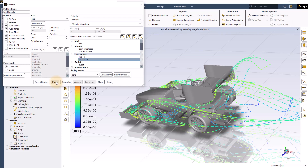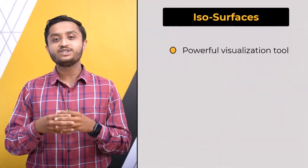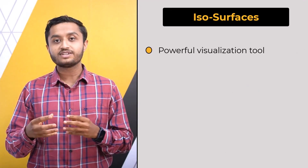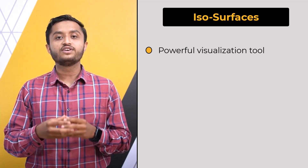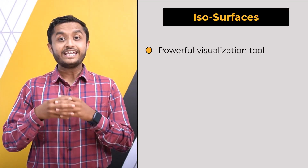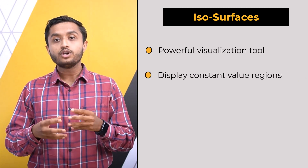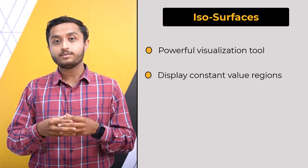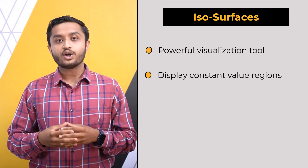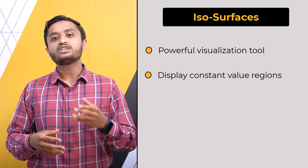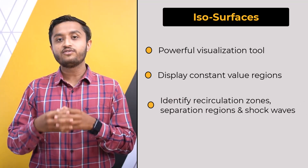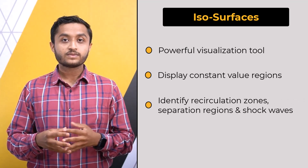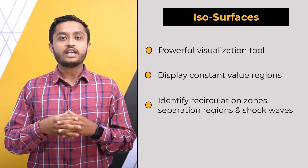Let's now move to isosurfaces. Isosurfaces are a powerful visualization tool in CFD qualitative post-processing used to understand and analyze the behavior of fluid flow. They are used to identify regions of fluid flow where a particular scalar variable — such as velocity magnitude, pressure, or temperature — has a constant iso-value, which helps in identifying prominent features such as recirculation zones, separation regions, and shock waves.